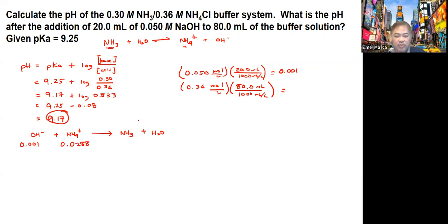For the ammonia, we do the same thing. 0.30 moles per liter times 80 mL over 1,000 mL per liter. This will give you around 0.024. These are the available moles that you have in the given system.